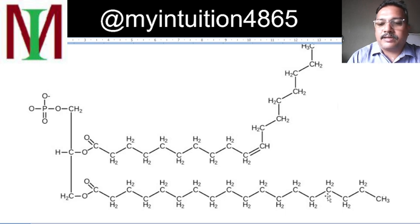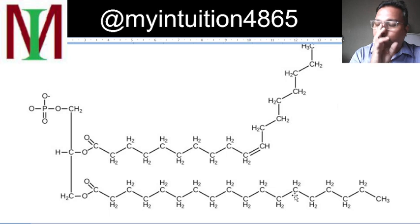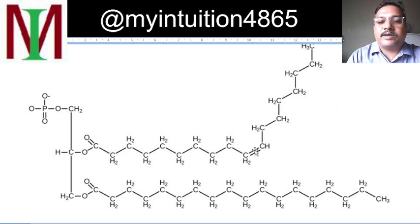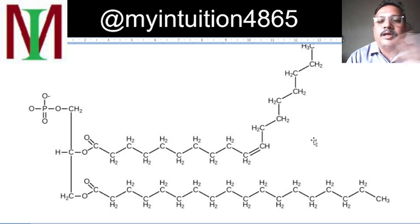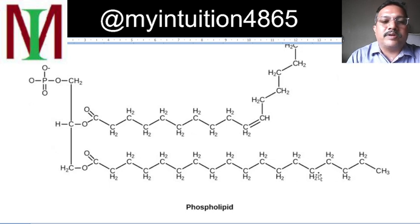This particular tail layer where only single bonds are present is highly saturated — all covalent bonds are occupied. The other layer, which contains one double bond, is unsaturated. You may have heard of saturated and unsaturated fatty acids — double bonds present means unsaturated; only single bonds means saturated.